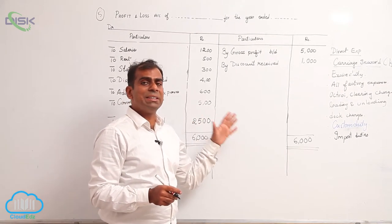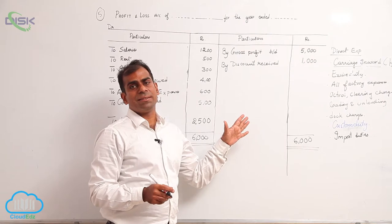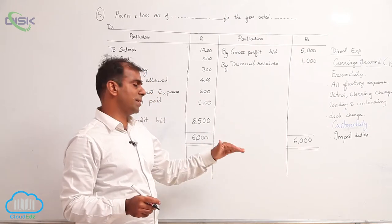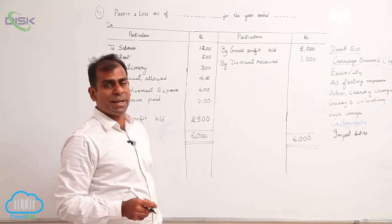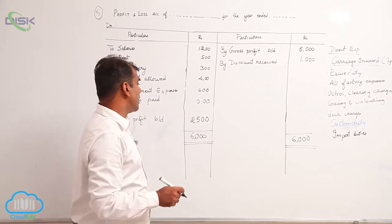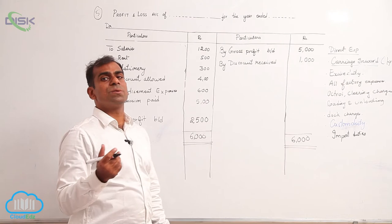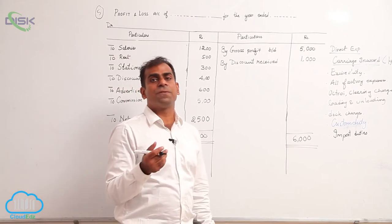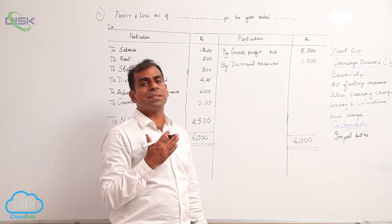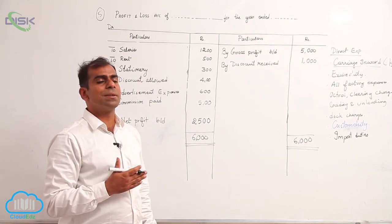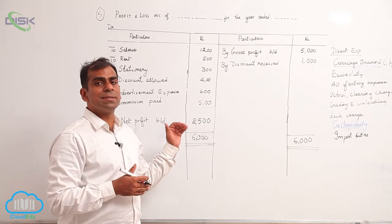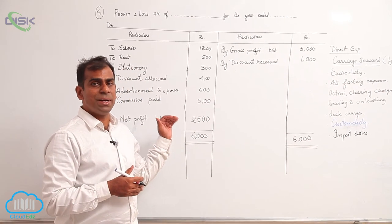This net profit will be added to capital in the balance sheet on the liability side later when you prepare the balance sheet, because profit belongs to the owner — after all, it is for that purpose the business is established.